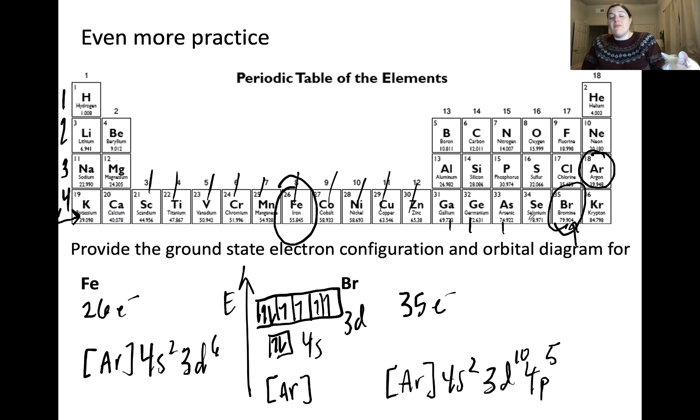So, I won't be drawing my orbital diagram for this, because I ran out of space. But if you were, you would fully fill out the 3d orbital like I drew for iron. And then on top of that, you'd have an additional 4p subshell, which would contain 5 electrons.